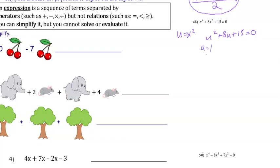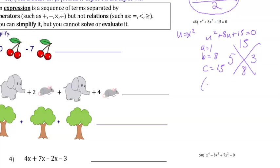With a = 1, b = 8, and c = 15, we need a×c = 15 and b = 8. We find two numbers that multiply to 15 and add to 8: those are 5 and 3. So we get (u + 5)(u + 3) = 0.